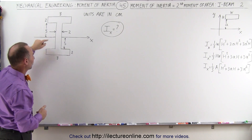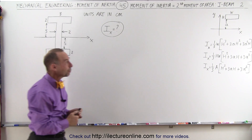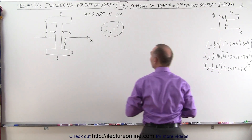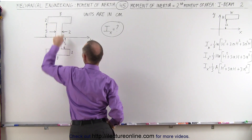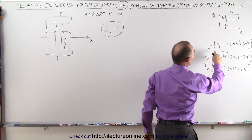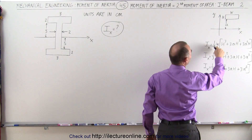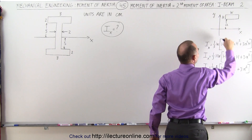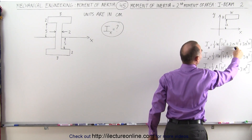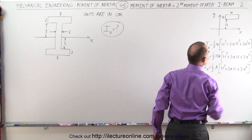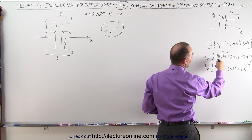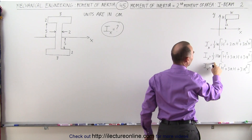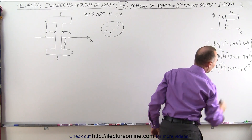We're trying to find the moment of inertia relative to the x-axis. What we learned in the previous video was that the moment of inertia of a rectangular section can be found using this equation: one-third the width times h-cubed, h being the height of that section, plus 3 times the distance h-squared plus 3a-squared times h. If we factor out h, then h times w is the area of that section, so we can write it as one-third the area times the remainder.